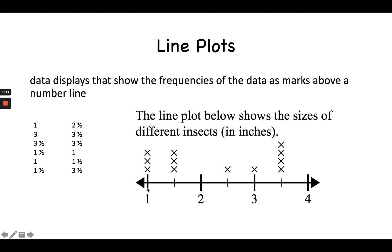When we look above the one on the number line, there are three X's, and that means there were three insects that measured one inch in length. Looking at my list, I see three ones. Now if I look at the one and one-half mark, I see three X's again, meaning there were three insects that measured one and one-half inches in length.